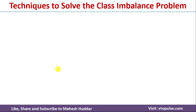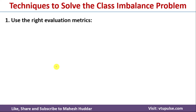This is not acceptable when building a machine learning model, so we need to handle the imbalanced dataset. There are mainly five techniques to handle the class imbalance problem.